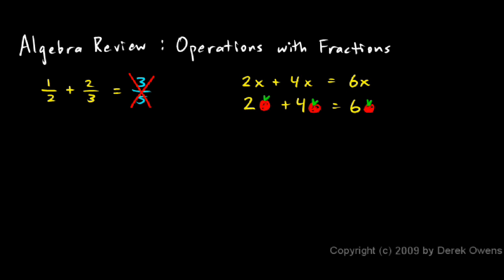Well, you could do the same thing like this. You could say 2 thirds plus 4 thirds equals 6 thirds. Just like we can add the variables or we can add the things, we can add the thirds. In this case, we're adding x's. In this case, we're adding apples. In this case, we're adding thirds.